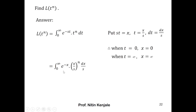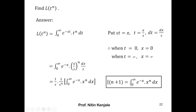After substitution, e raised to minus st becomes e raised to minus x. Since t is x over s and dt is dx over s, the factor 1 over s raised to n plus 1 is constant and can be taken outside the integral. We are left with the integral of e^(−x) · x^n dx from zero to infinity. Recall that the gamma function Γ(n+1) is defined as the integral from 0 to infinity of e^(−x) · x^n dx, which is exactly this integral. So we replace this integral by Γ(n+1).